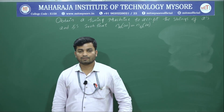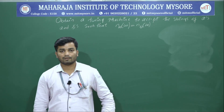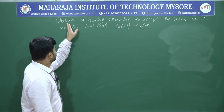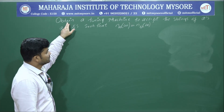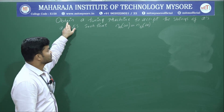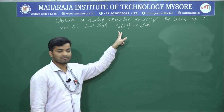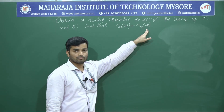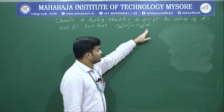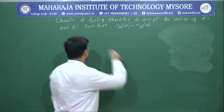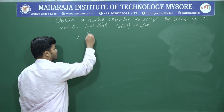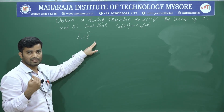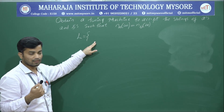Hello everyone. I will continue with the next problem in Turing machine. The next problem is: obtain a Turing machine to accept strings of A's and B's such that the number of A's in W is equal to the number of B's in W. We will look at a language where whatever A's are within the string should be equal to whatever B's are within the string.